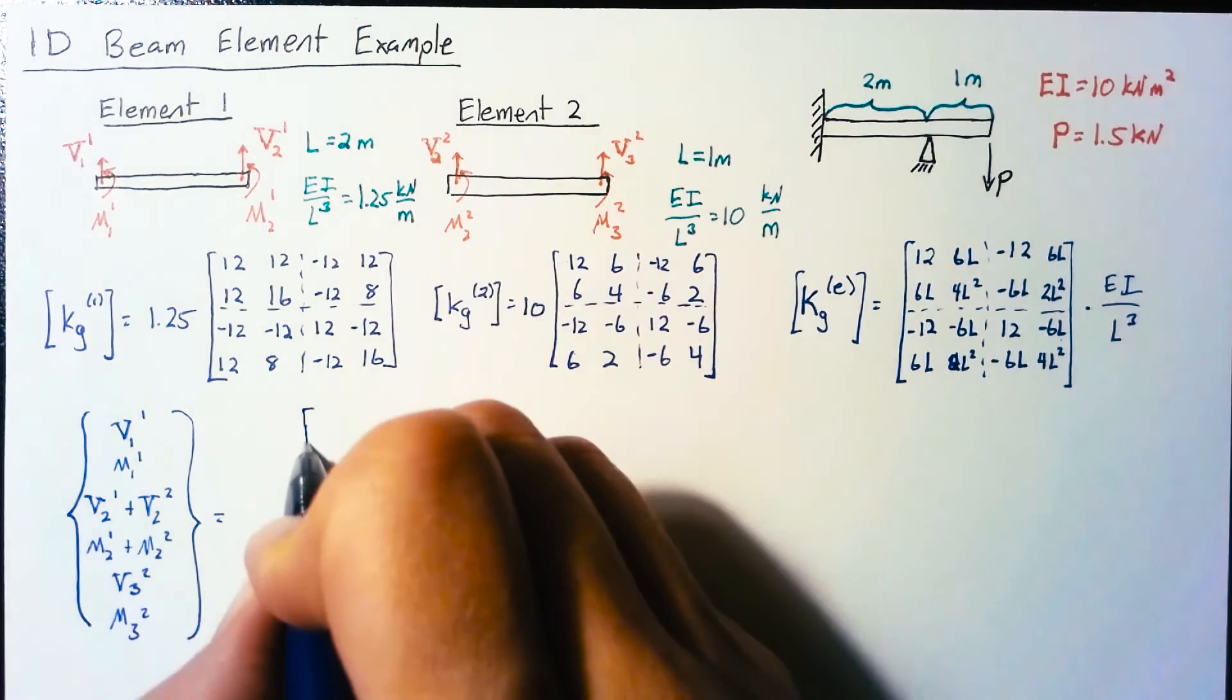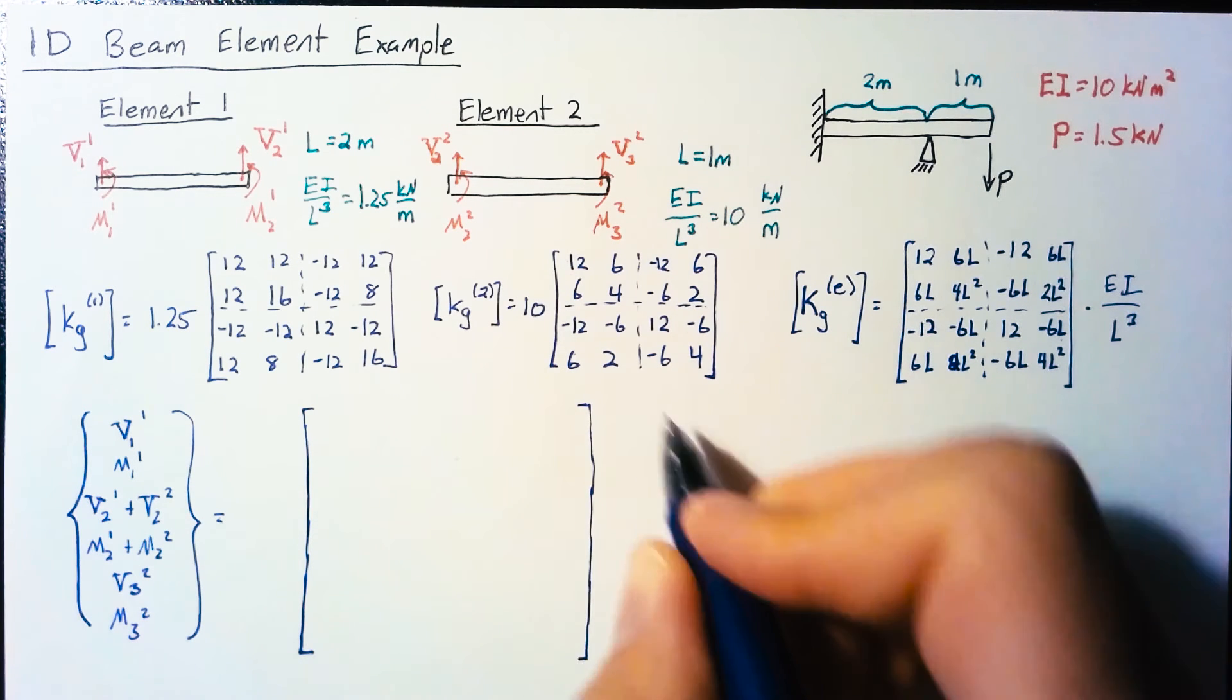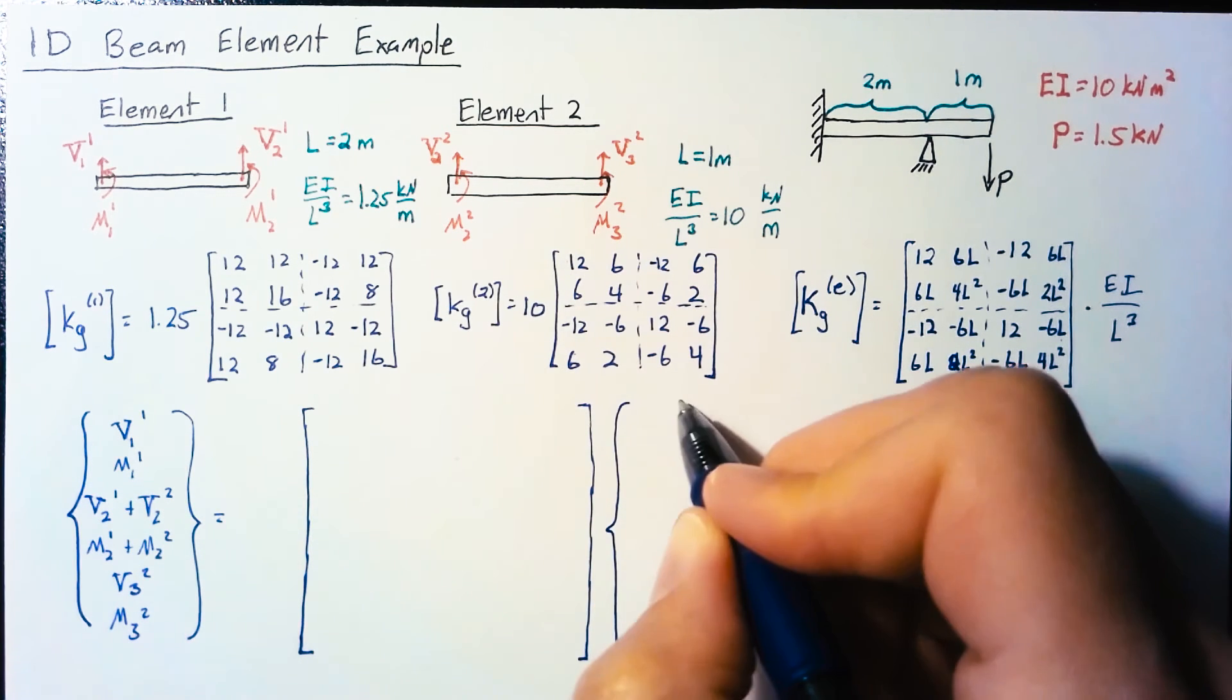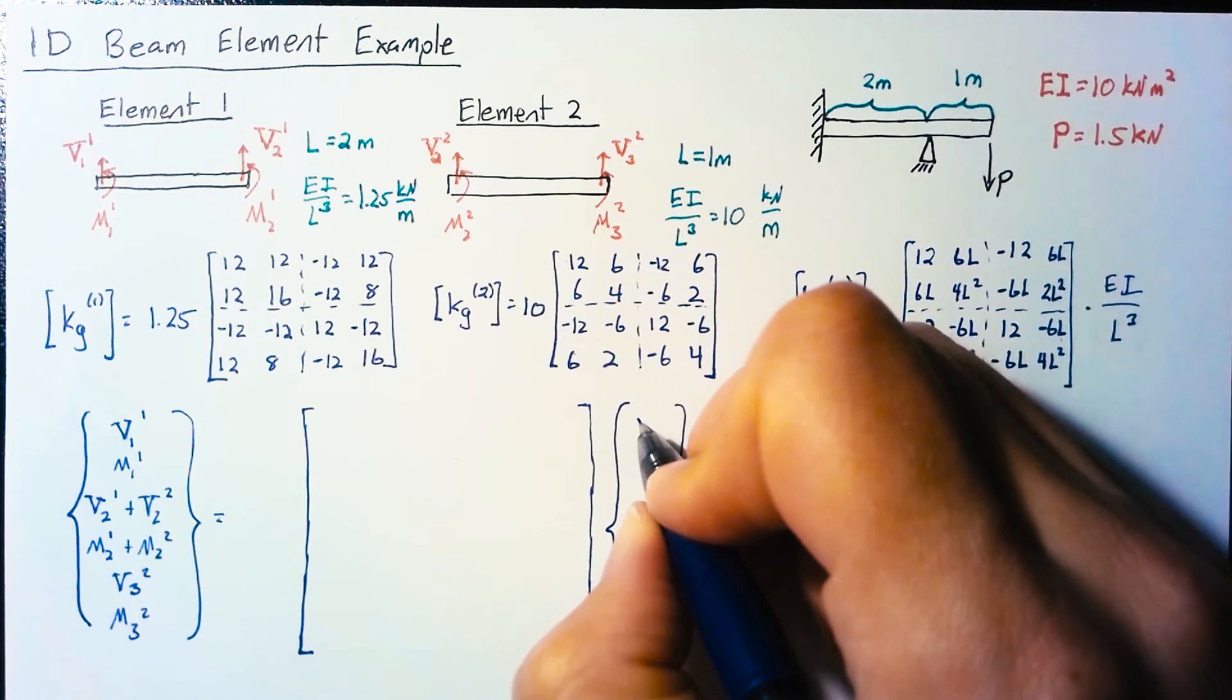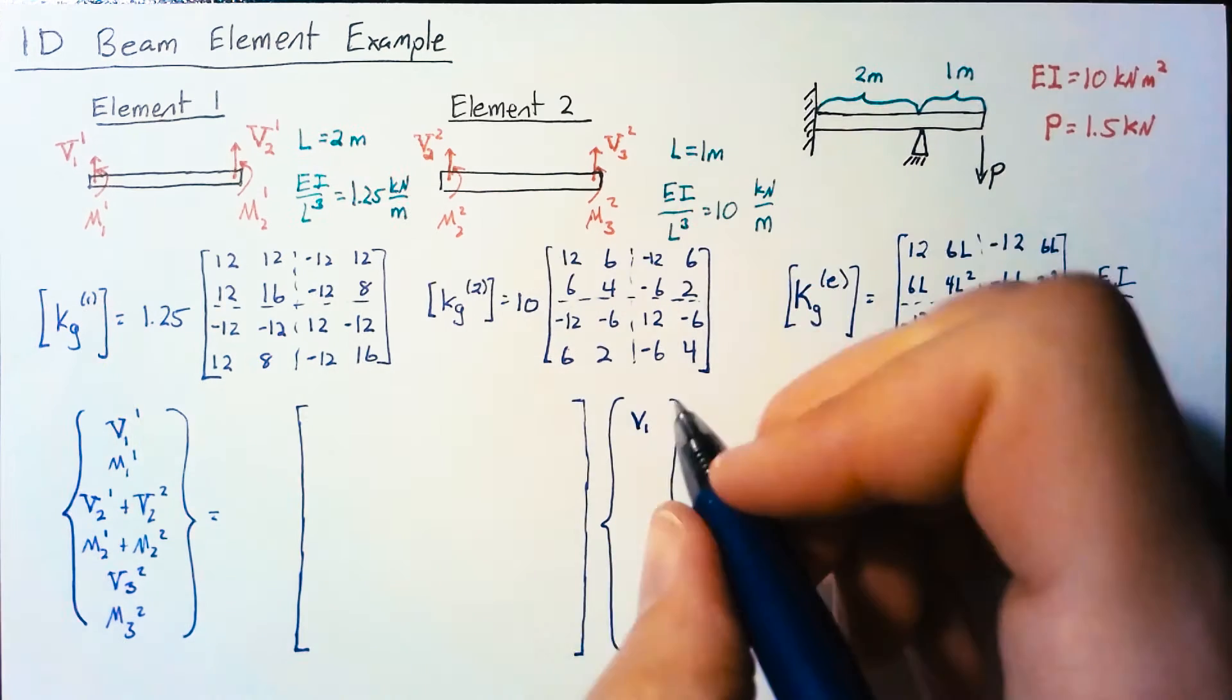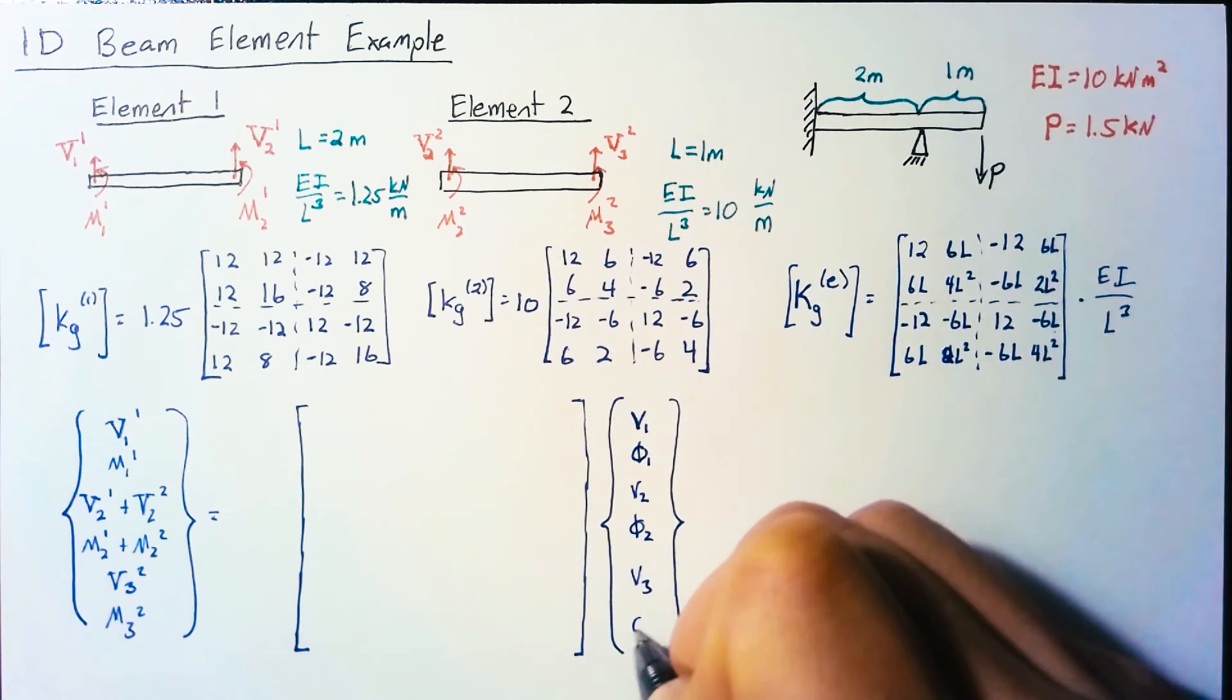We're going to have a large matrix, 6 by 6, multiplied by our displacement vector. Our displacements are the vertical displacement V and the slope or rotation of the node φ. We'll split this into nine submatrices.